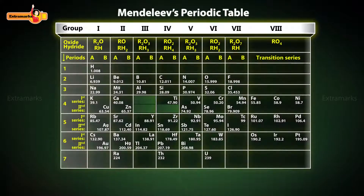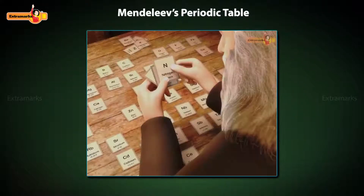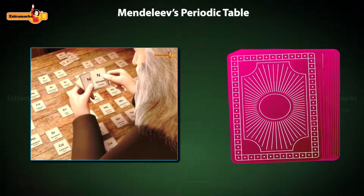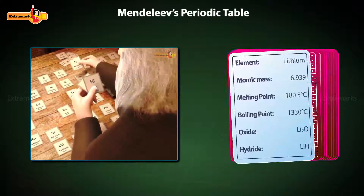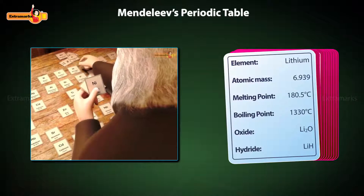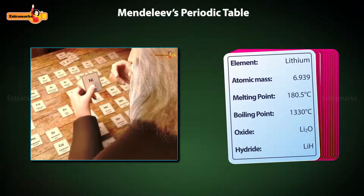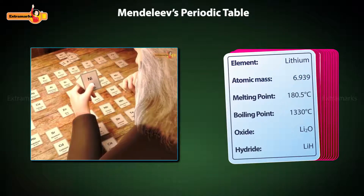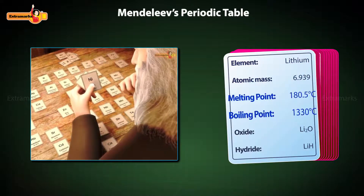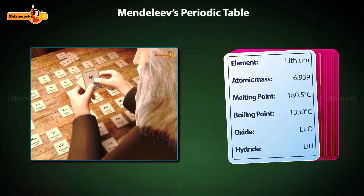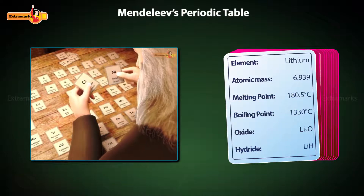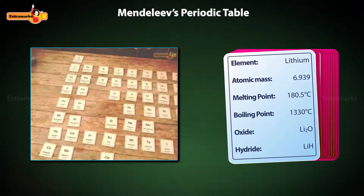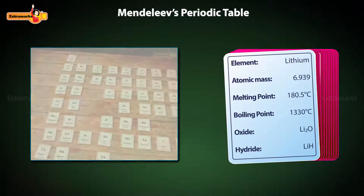But how did he reach his periodic table? Mendeleev took 63 cards and wrote all details such as name of element, atomic mass, the known physical and chemical properties, and the formulae of its hydride and oxide on each card.